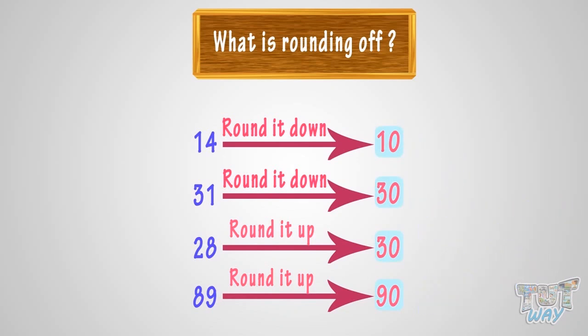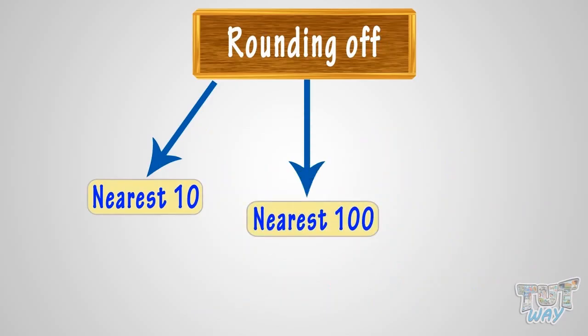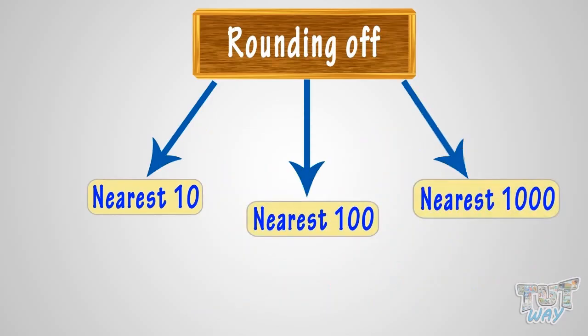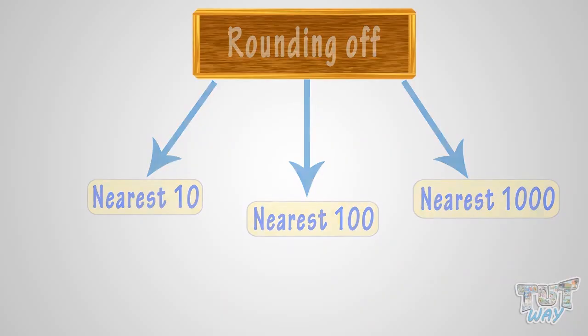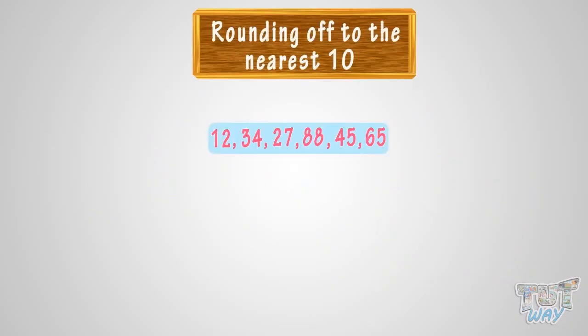Rounding can be to the nearest ten, nearest one hundred, or nearest thousand. So let's first learn rounding to the nearest ten.